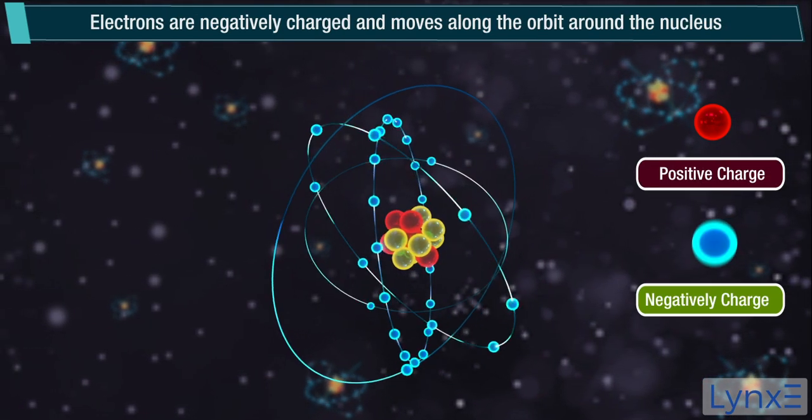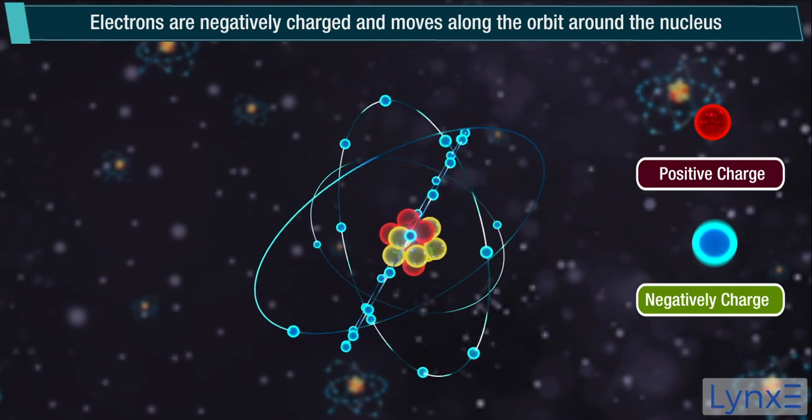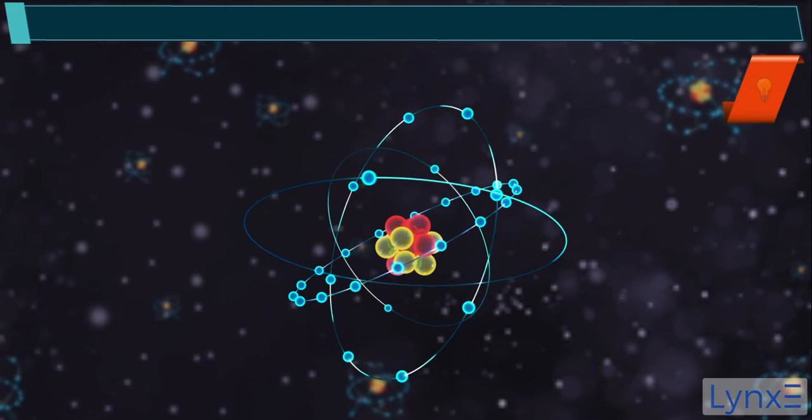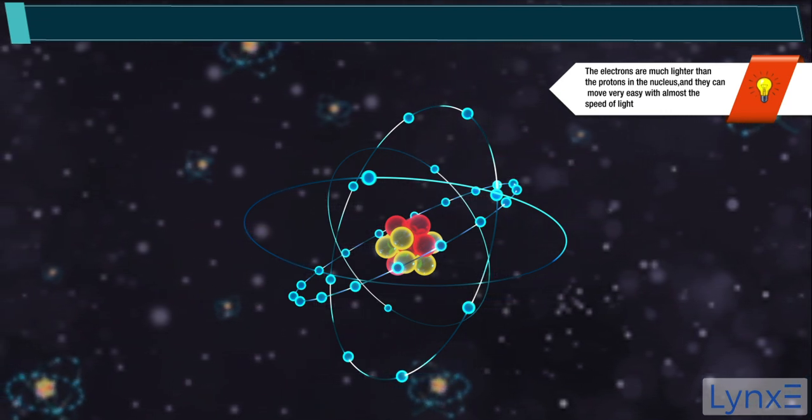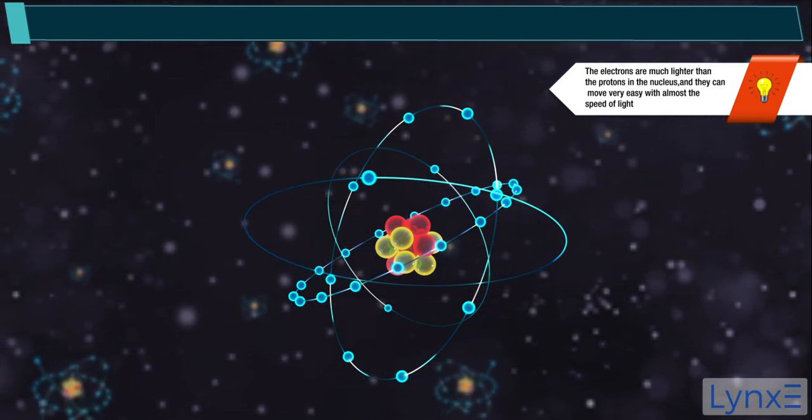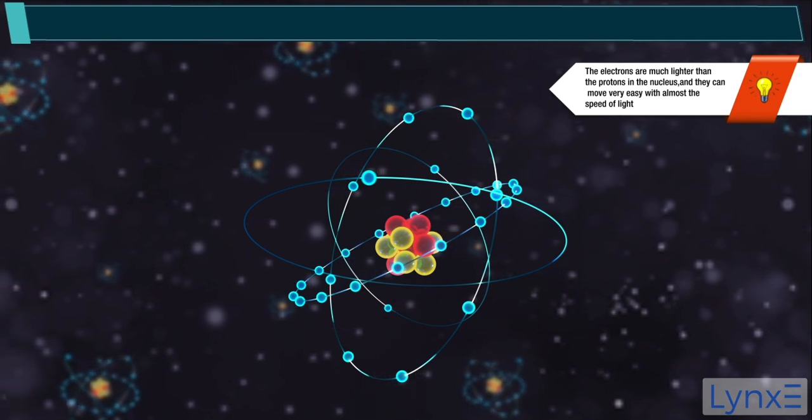Electrons are negatively charged and move along the orbit around the nucleus. Note, the electrons are much lighter than the protons in the nucleus, and they can move very easy, with almost the speed of light.